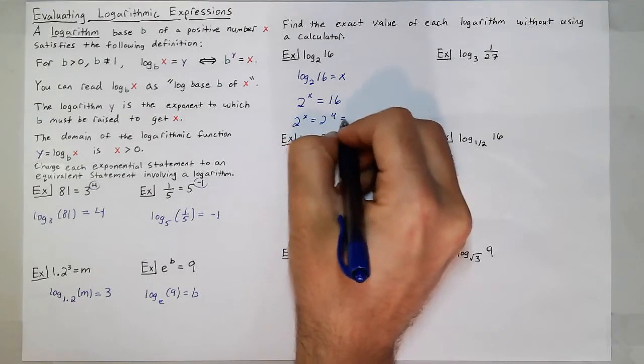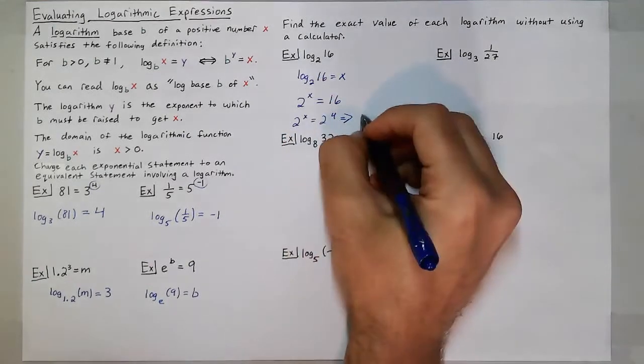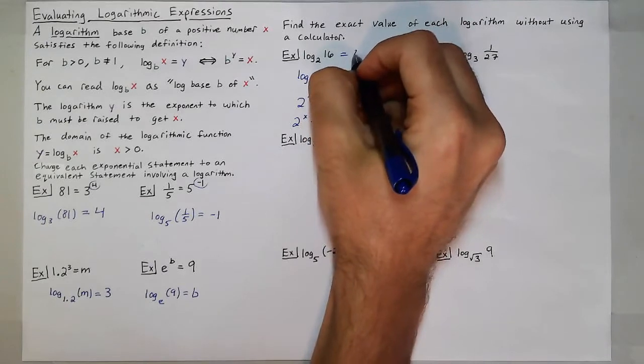16 is also known as 2 to the 4th. So that tells me that the power I need to get 16 is 4, so log base 2 of 16 is equal to 4.